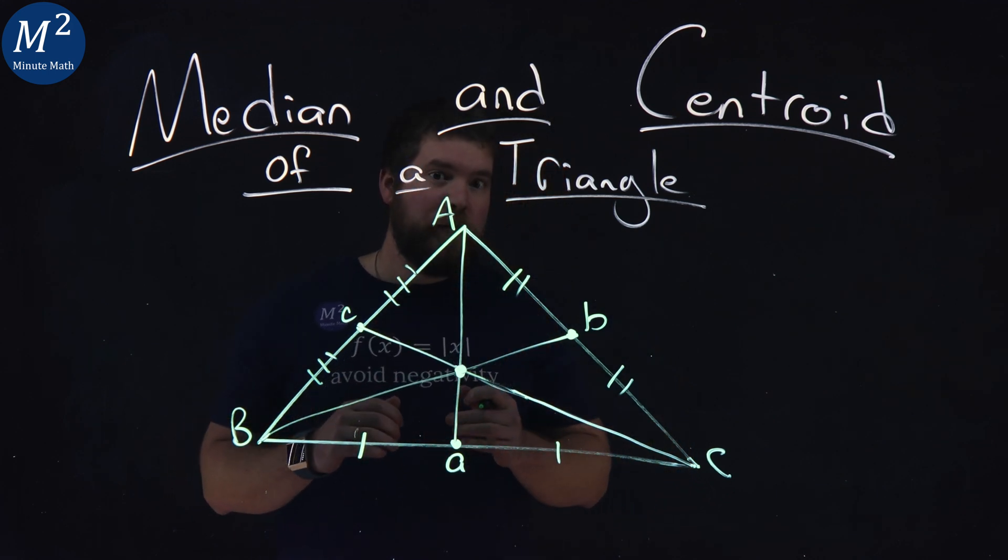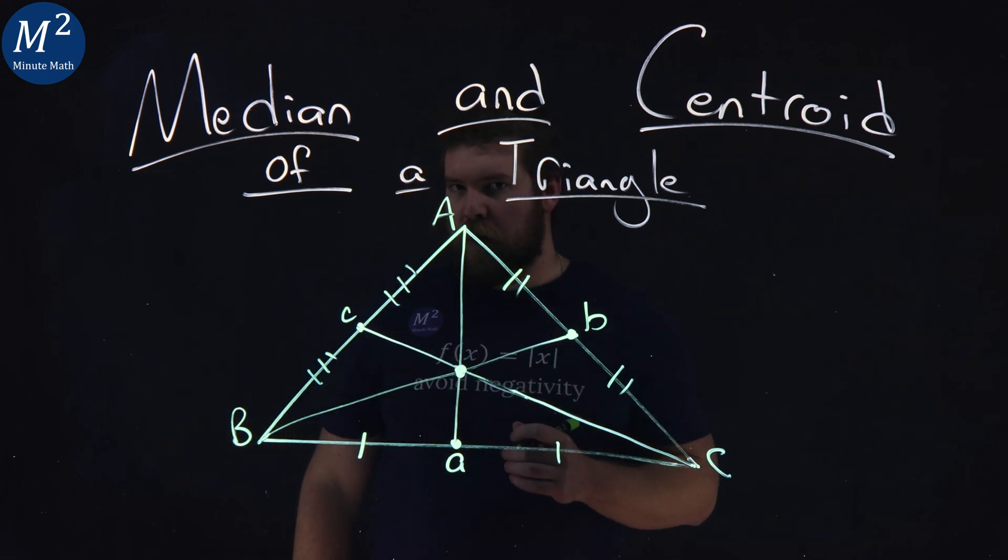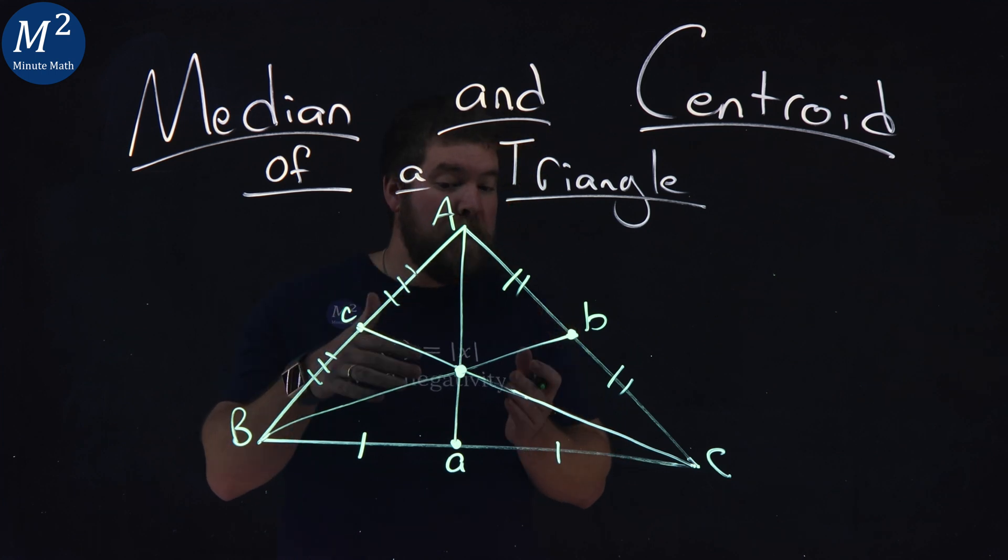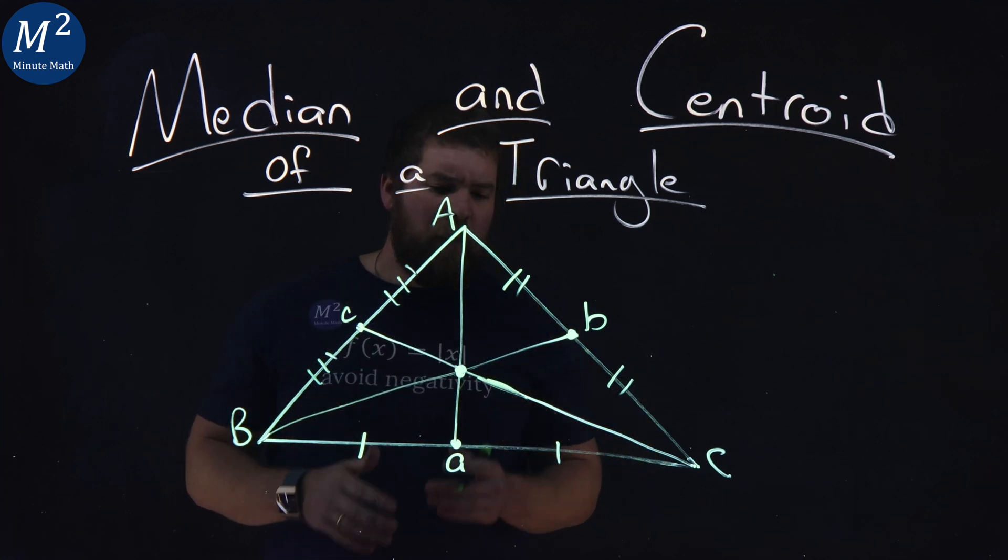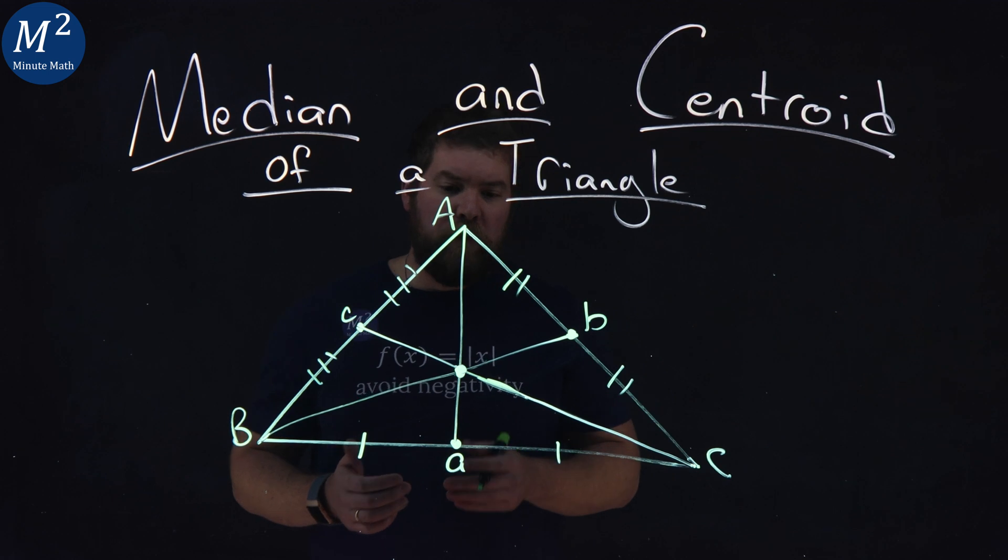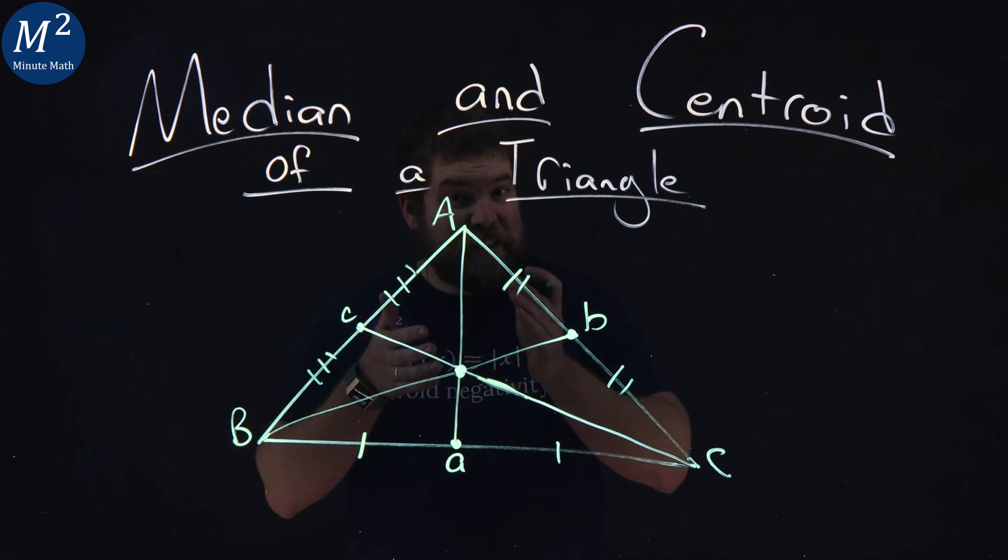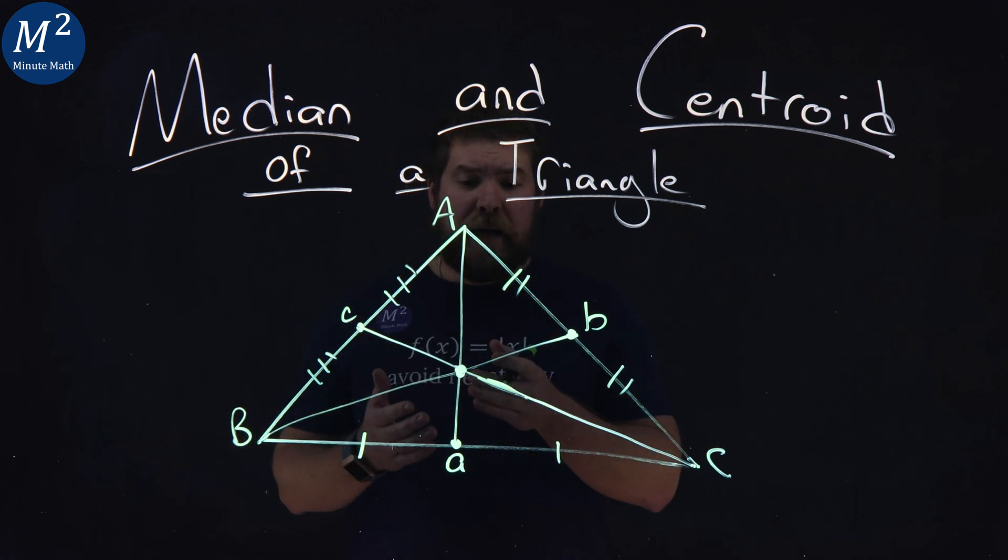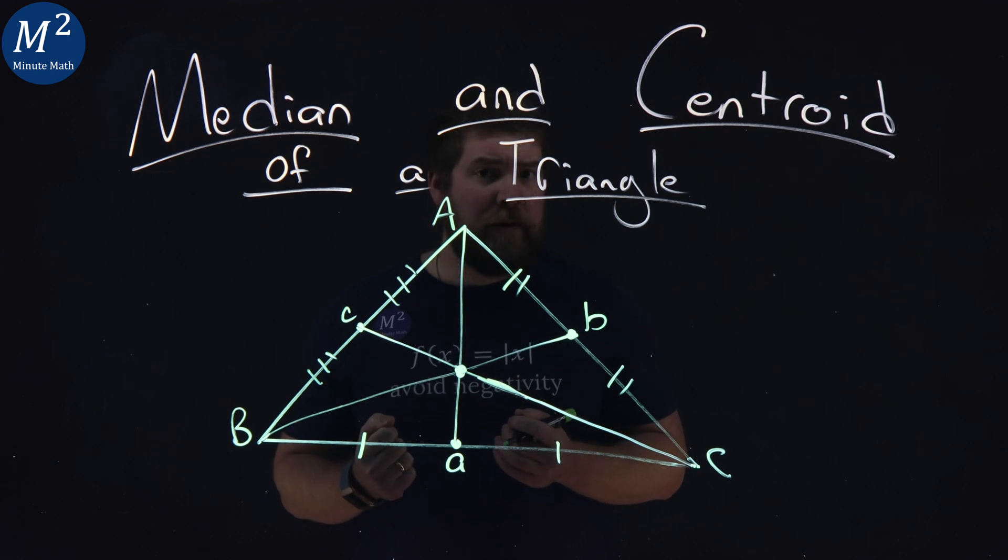What have we found here? What we have found is a centroid of the triangle. It is where all three medians intersect. And what's the point of the centroid of the triangle? Well, the centroid of the triangle is the exact middle point.